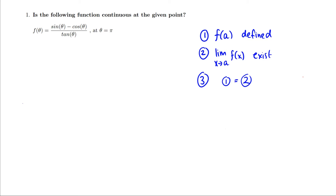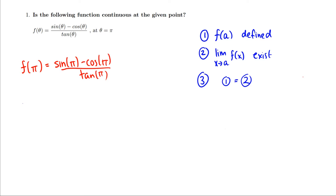Let's start with the first one. Let's take f and substitute pi into it to see if f of pi exists. This will be sine pi minus cosine of pi, all over tangent of pi. Sine of pi is zero, cosine of pi is negative one, so we're subtracting negative one. Tangent of pi equals sine pi over cosine pi, which is zero over negative one, equal to zero.